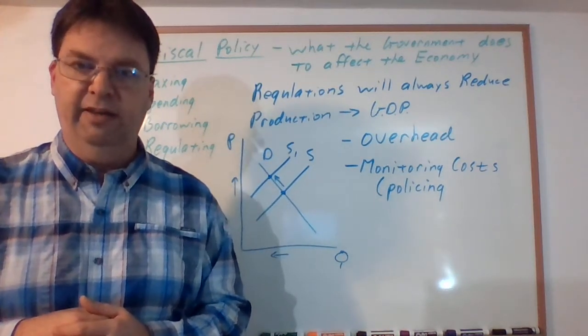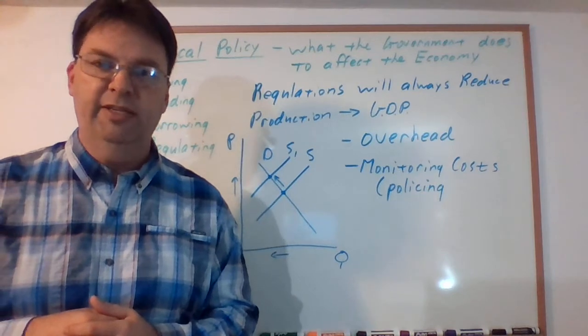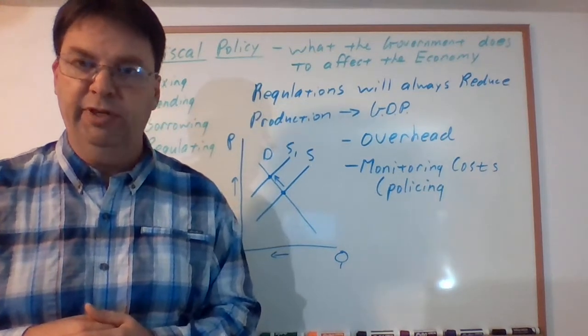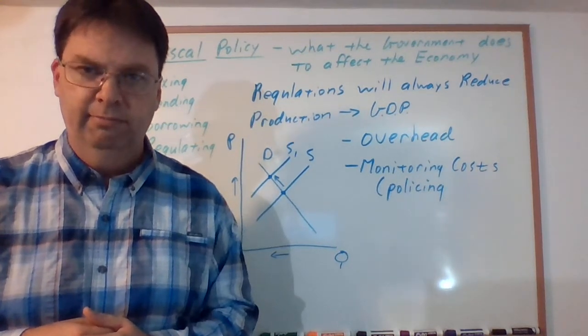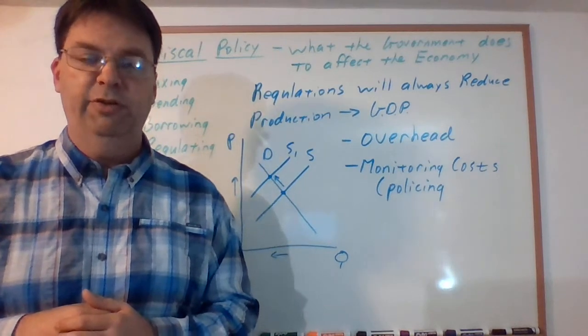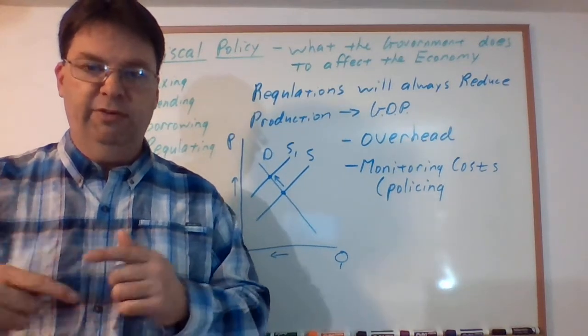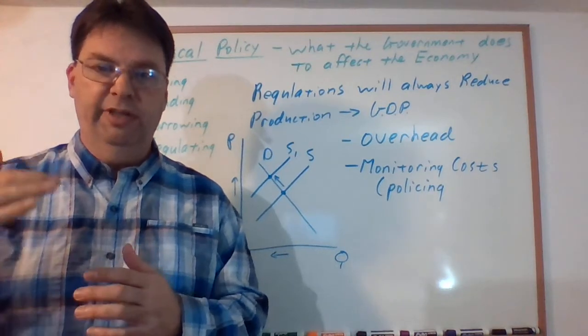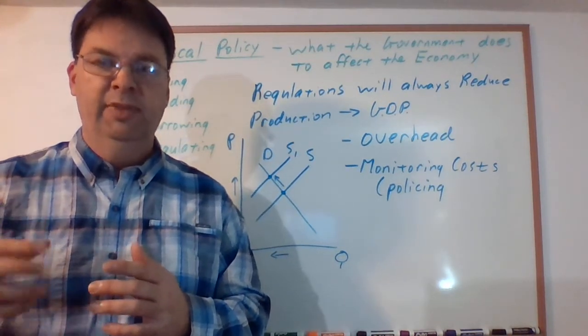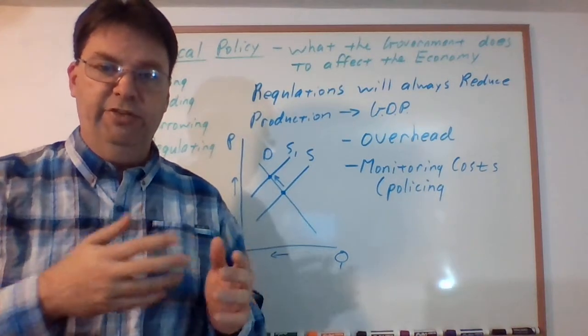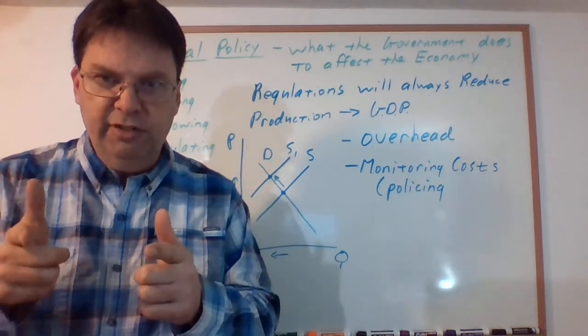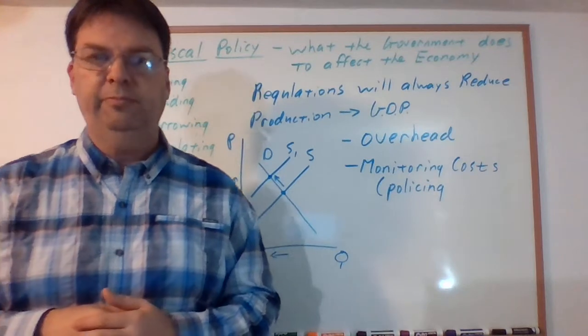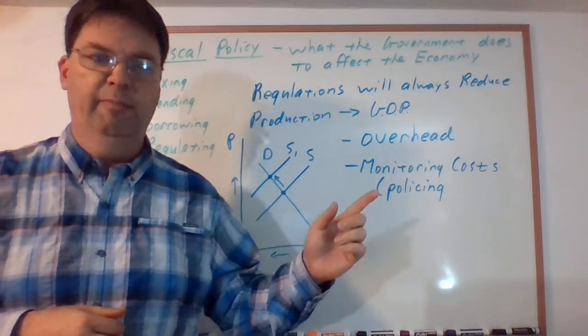You want people to produce things in the right way—well, okay—but then you're going to lower their production because they have to do it only a certain way. And you're going to send out a bunch of people to then look at them and say do it the right way. So the policing or monitoring costs are going to be quite high.